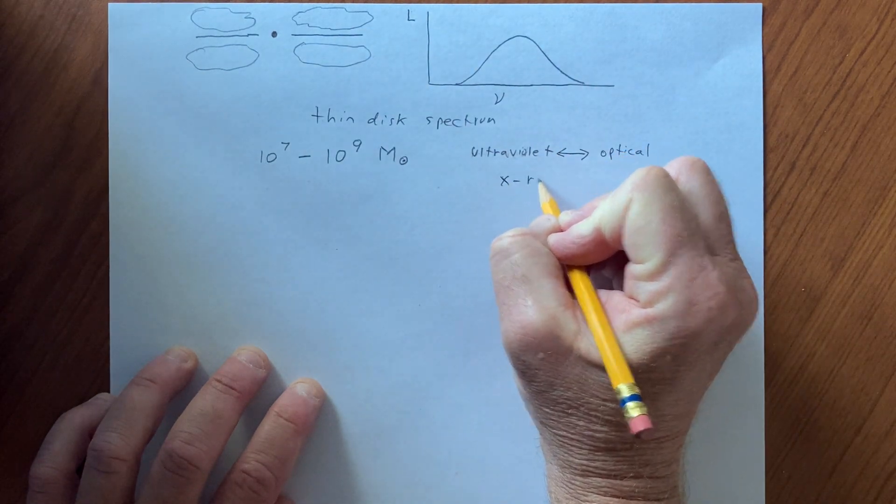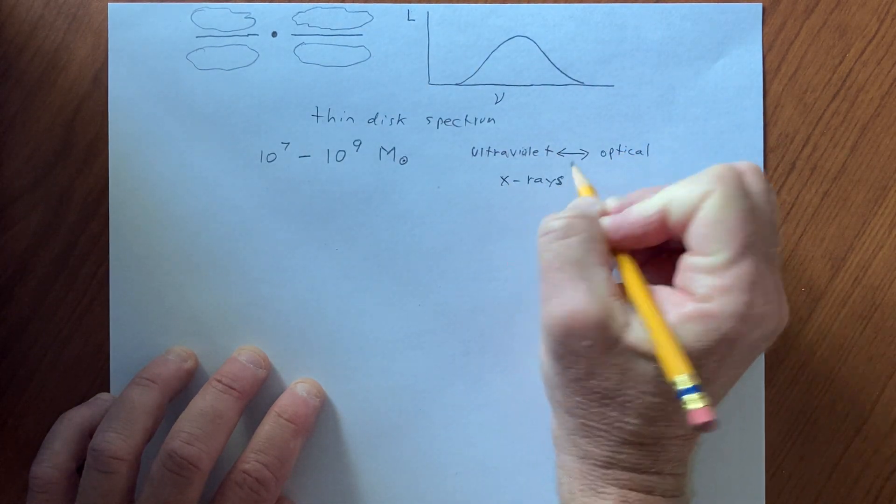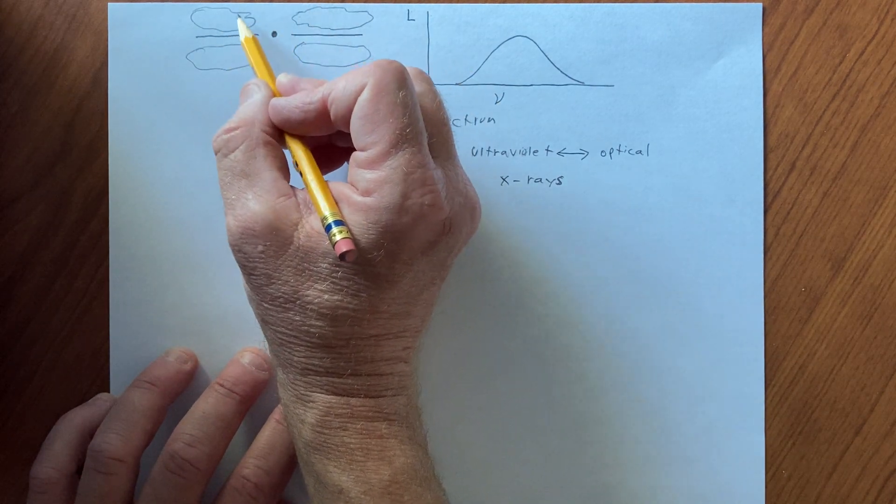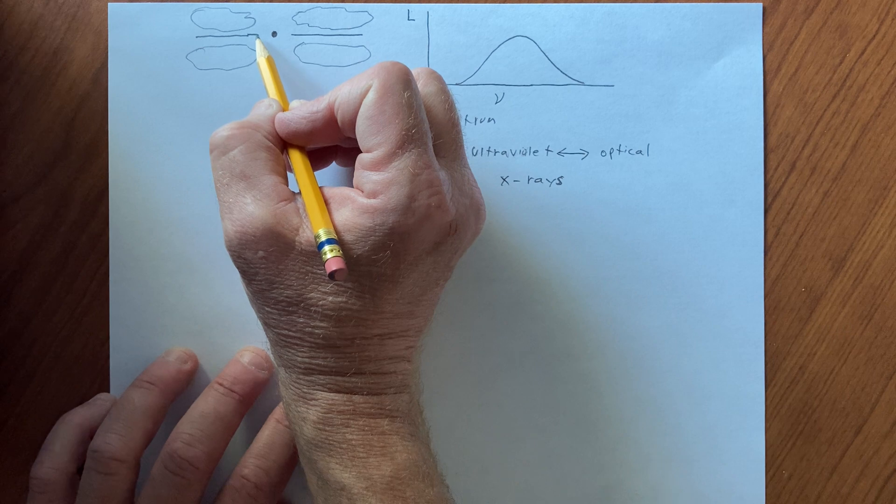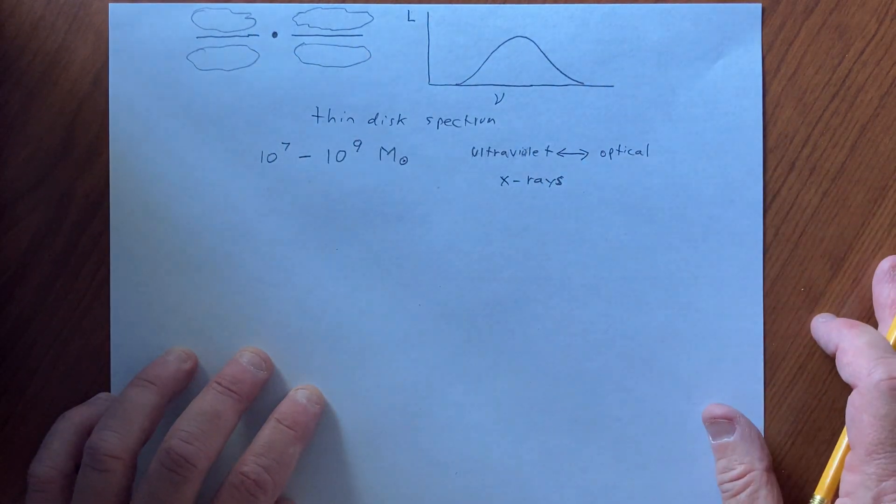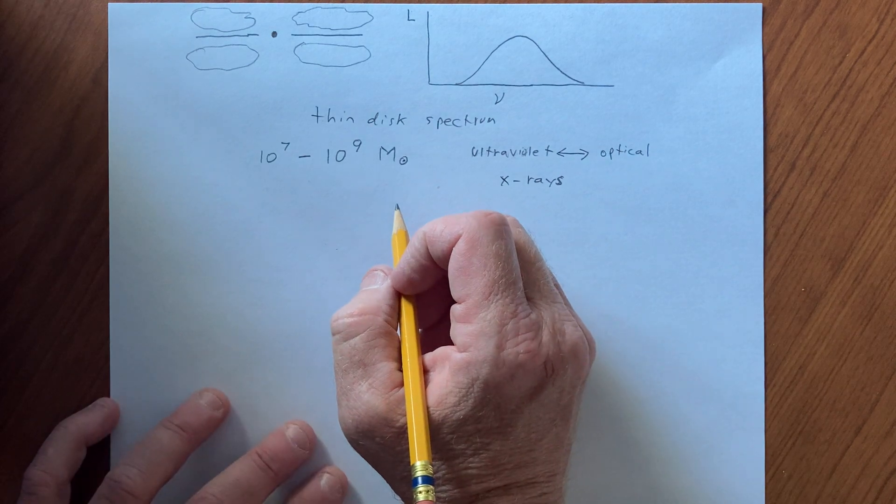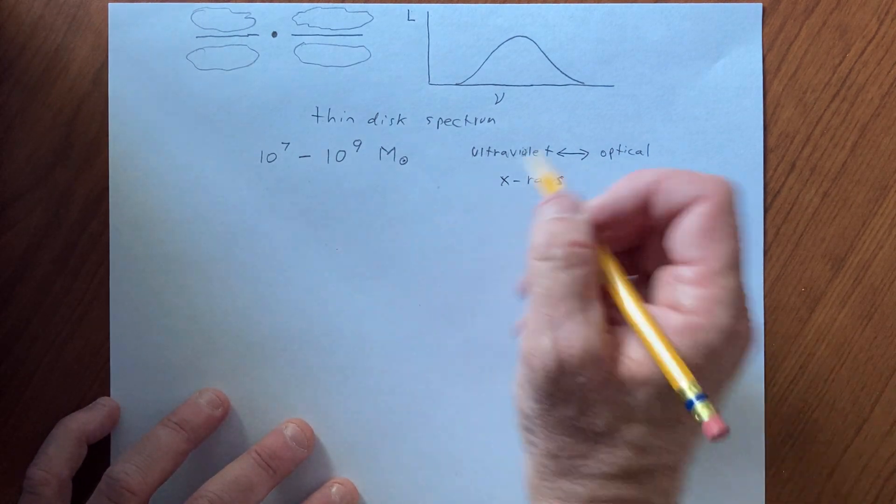So actually, we can also have x-rays from these kinds of systems produced, not directly from the accretion disk, but from this corona, where you can enhance the energies. So you get a certain kind of spectrum, the spectrum of a thin disk.